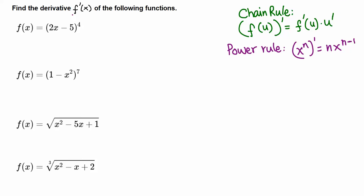Find the derivative f prime of the following functions. First, we have the quantity (2x - 5) raised to the 4th power. This is not simply x raised to 4 — it's more than that. We have a composition of two functions: (2x - 5) is the inside function, and 'raised to 4' is the outer function. From the chain rule, when we have outer function f and inner function u, we take the derivative of the outer function, leave the inside alone, then multiply by the derivative of the inner function.